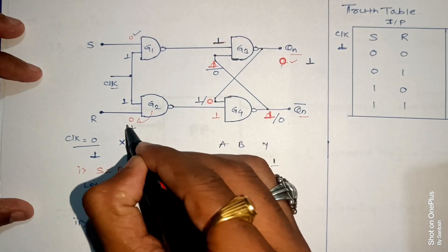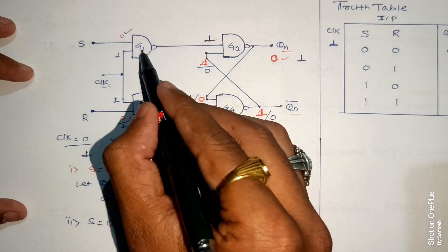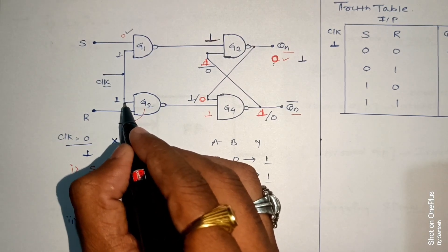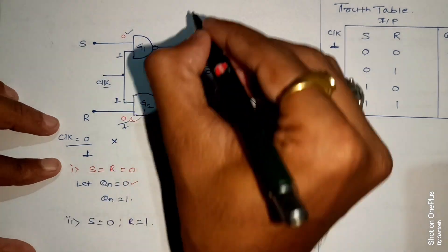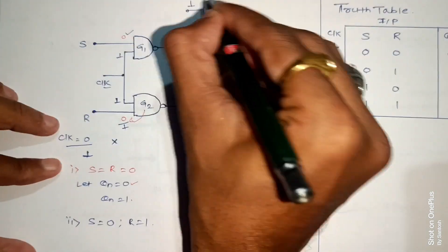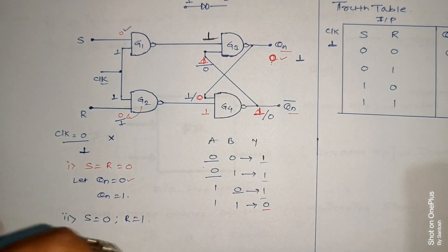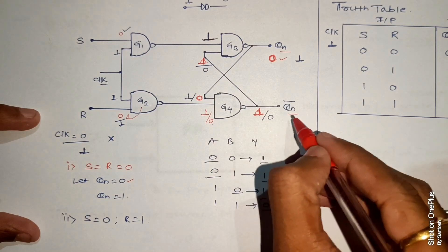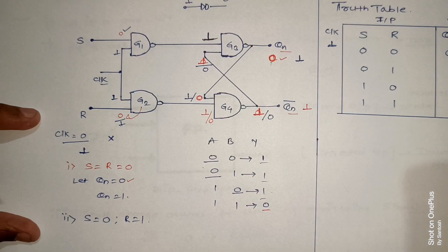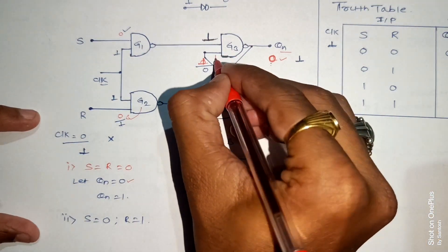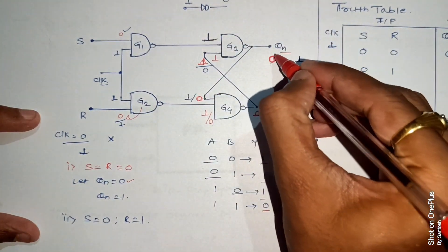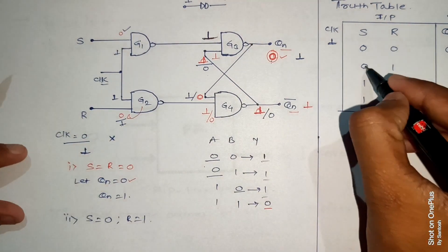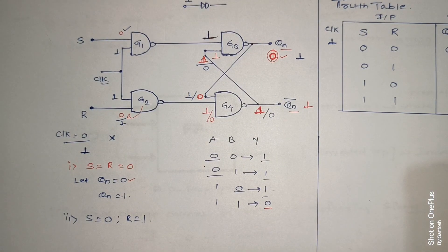For S=0, R=1 with clock=1: G1 has one input as 0, so its output is 1. G2 has input 1 — with clock as a control signal, G2 acts as a NOT gate, so input 1 gives output 0. This 0 makes G4 output 1. G3 has one input as 0 so its output is 1. The final result is QN=0. So for S=0, R=1, the fixed output is 0 — the flip-flop is reset.